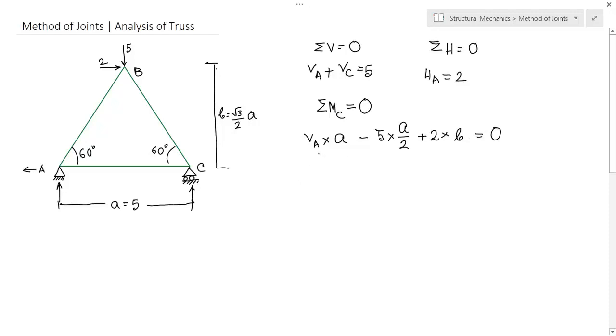Determine the force. Calculate this equation, you know A and B both. So VA will come out 0.768. VC will be 5 minus VA, 4.232. Calculate it.